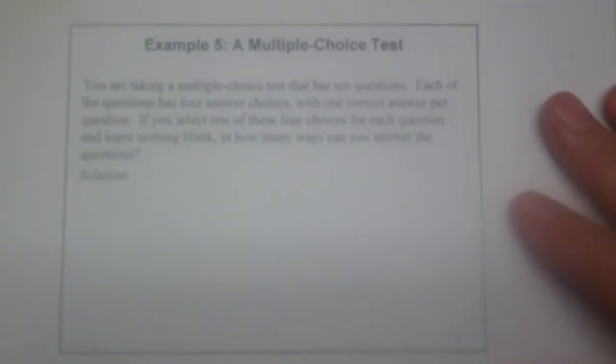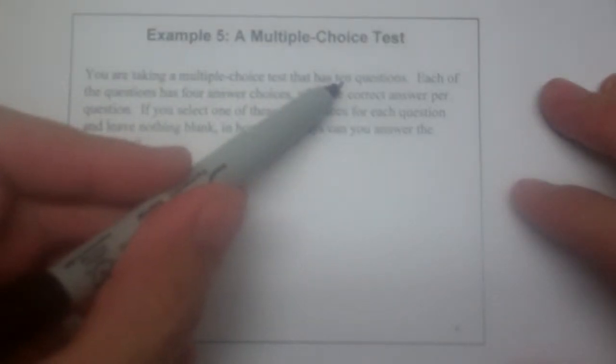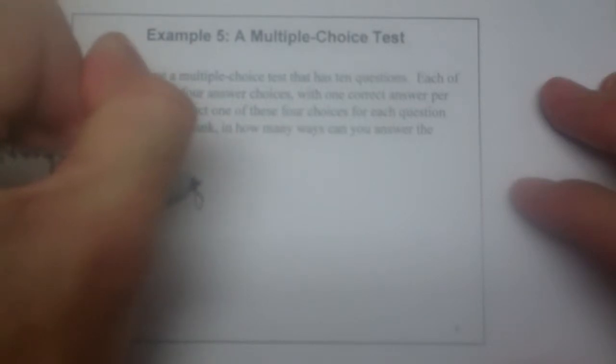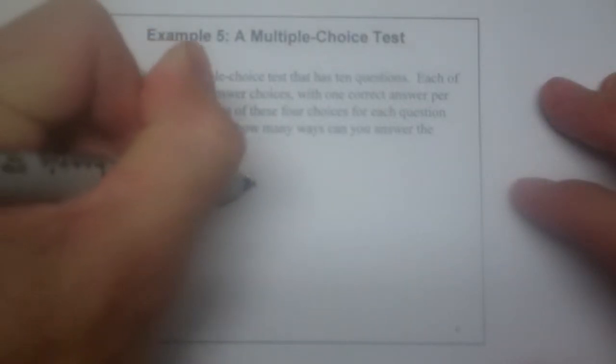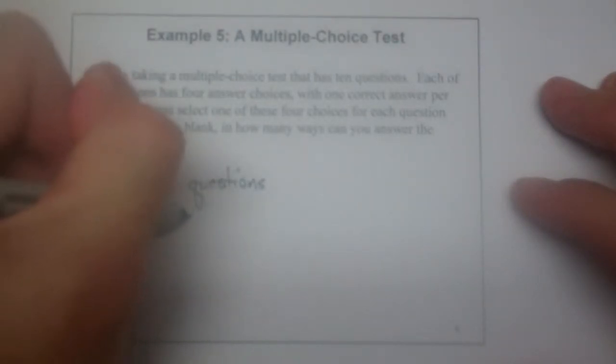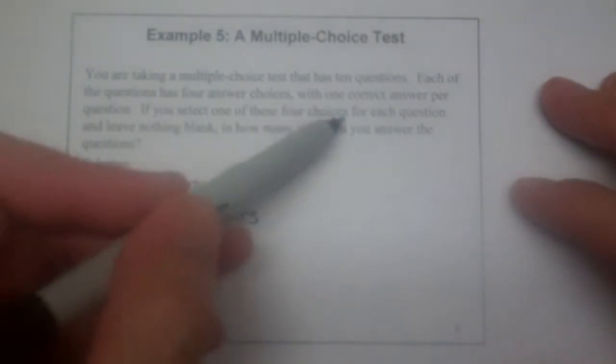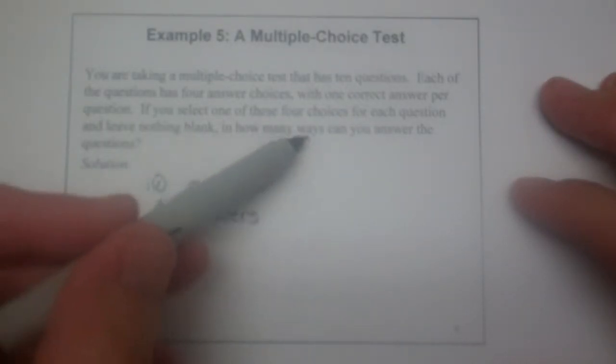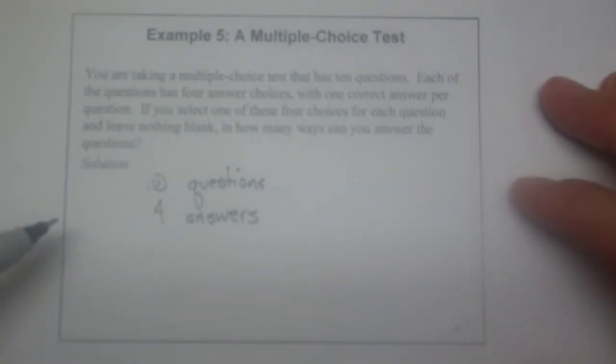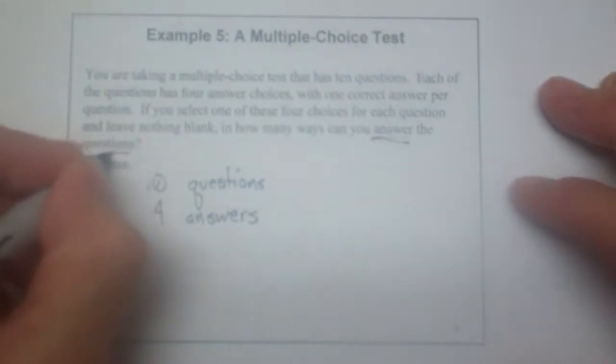Example number five. Suppose you are taking a multiple choice test that has ten questions, so we have ten questions. Each question has four answer choices with one correct answer per question. If you select one of these four choices for each question and leave nothing blank, in how many ways can you answer the questions? Now, it says in how many ways can you answer the questions.